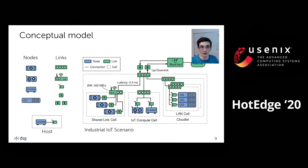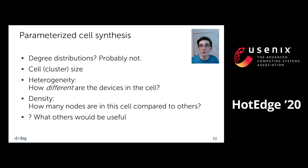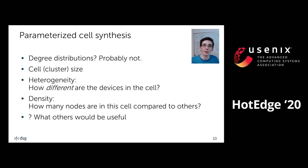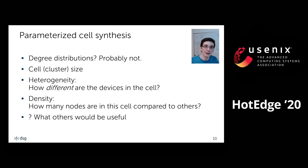An important part of synthesizing cells is parameterization. Most cells can be parameterized with a size parameter. We also have a concept of cell entropy that puts a number on the heterogeneity of a cell. For example, a server rack with the same type of server computer would have zero heterogeneity, whereas if you want to synthesize a cell with many different compute devices or varying compute and storage capacity, you would pass a high value. This is useful when evaluating how well a system can deal with heterogeneous infrastructure.